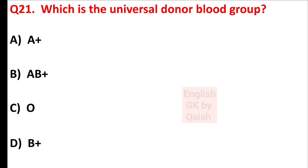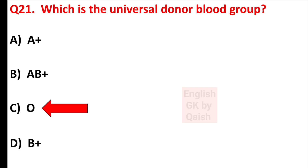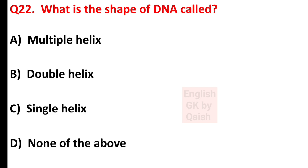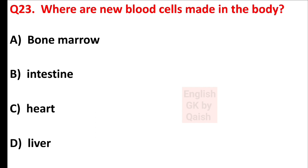Which is the universal donor blood group? Answer is option C — O group. What is the shape of DNA called? Answer is option B — double helix. Where are new blood cells made in the body? Answer is option A — bone marrow.